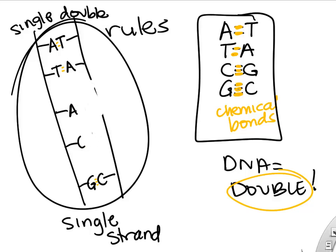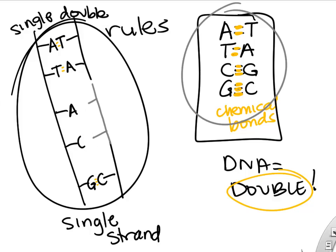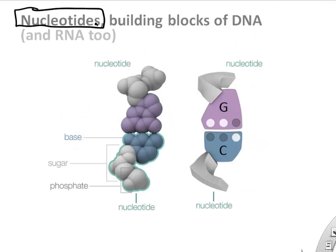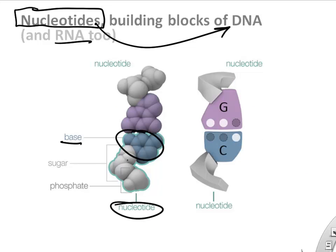This does a couple things: it makes the DNA more stable, but it's also cool because if you ever have to fix your DNA because you lost some or damaged some, you always know the sequence because you know the rules. So we know a T and a G have to go in to fix that portion. If you know one strand, you'll always know the other strand.